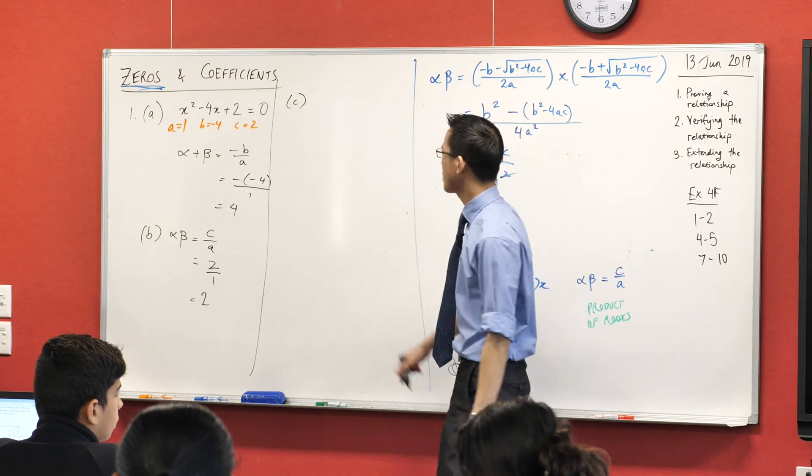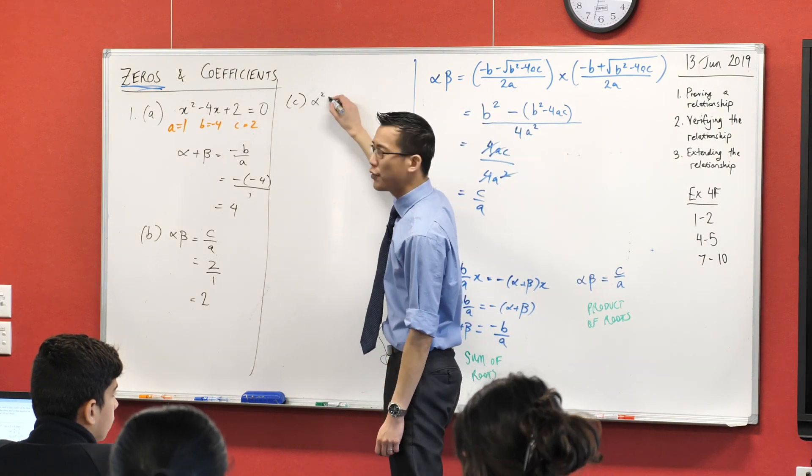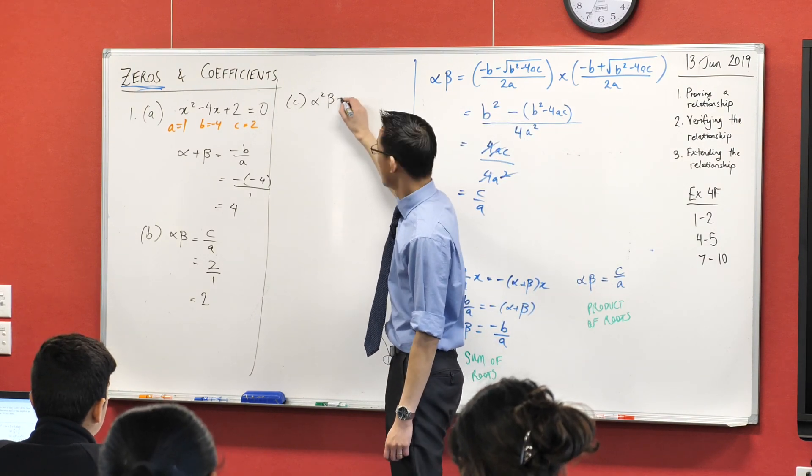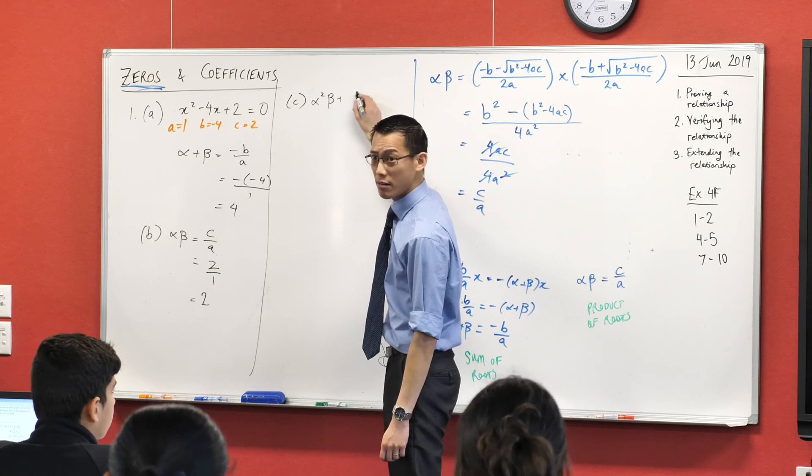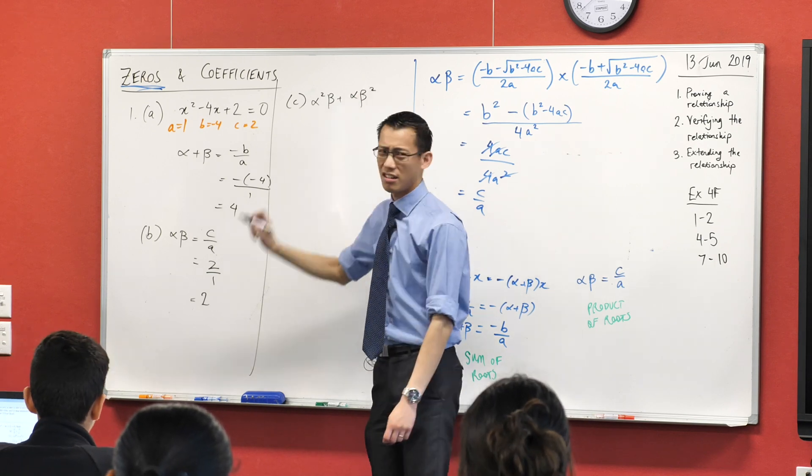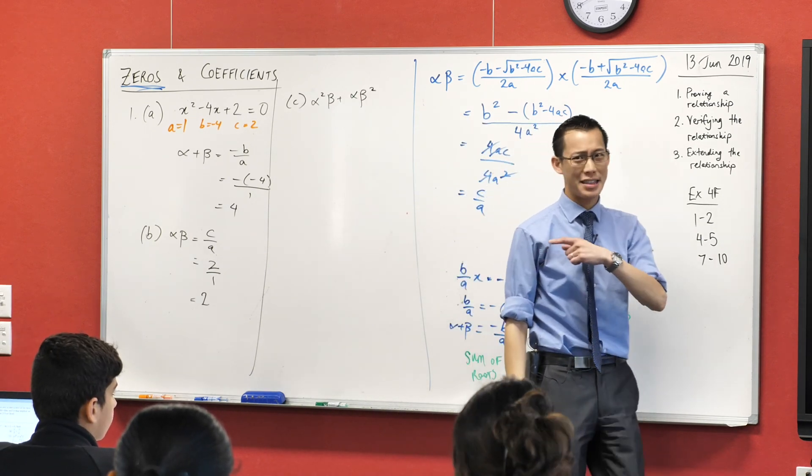It looks like this weird, complicated, messy thing. You're like, what? Alpha squared beta, plus, is it alpha beta squared? Alpha beta squared. You're like, oh, gross. What? How am I supposed to work that out?